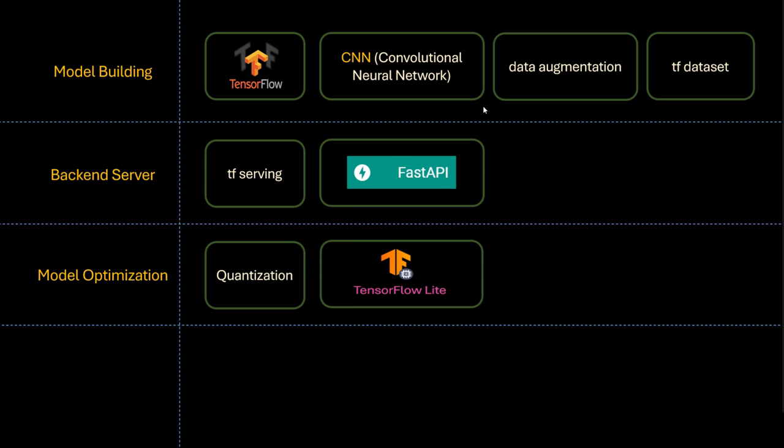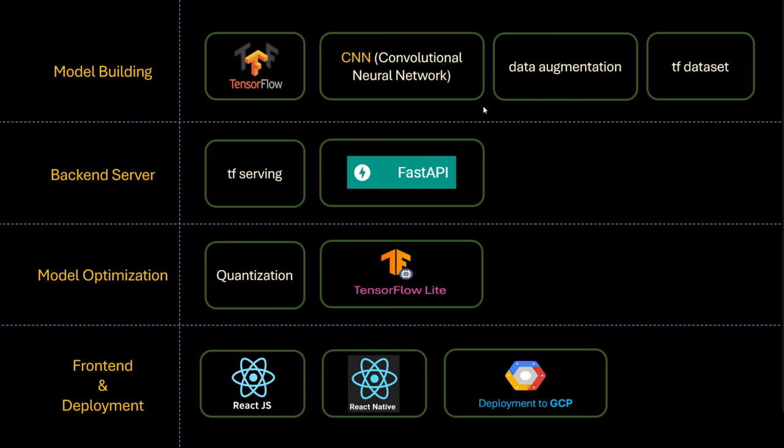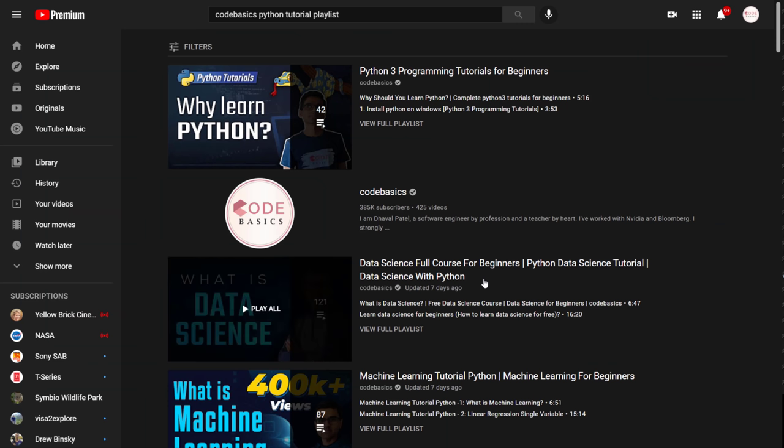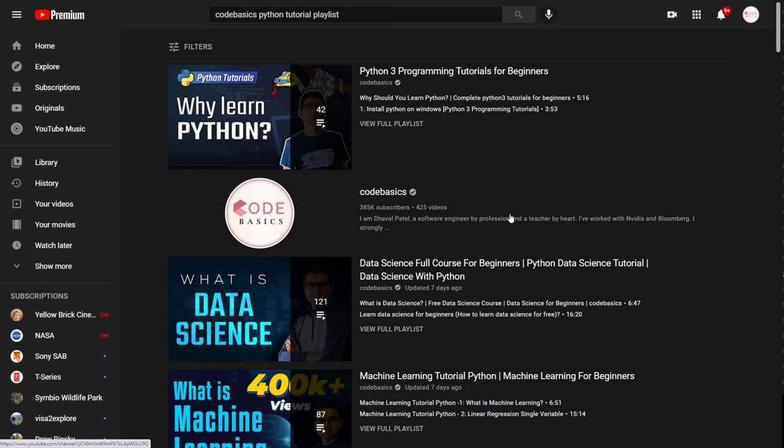As a backend server and ML ops, we'll be using TF Serving and FastAPI. In terms of model optimization, we are using quantization along with TensorFlow Lite. And for frontend and deployment, we are using React.js for website, React Native for mobile app development, and we are using GCP for our deployment.